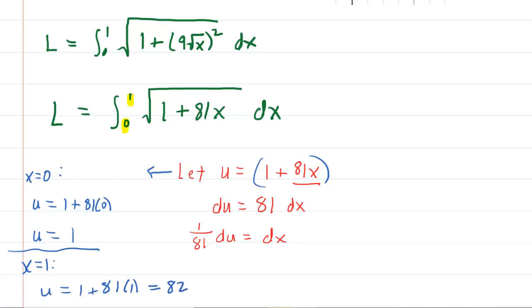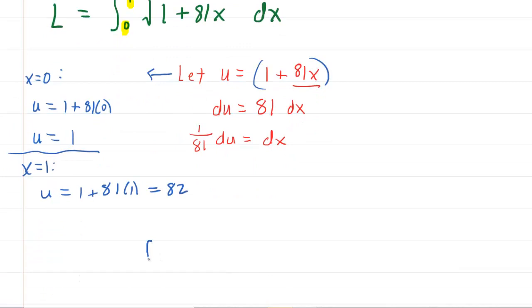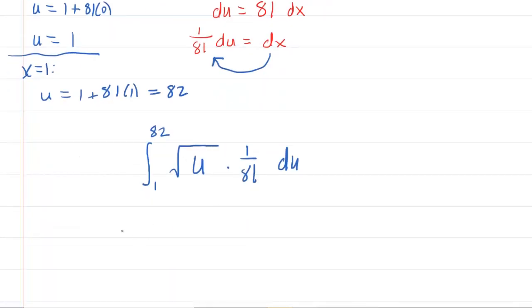Those are your new bounds, so you can rewrite the integral as follows. You're going to integrate from your new lower bound of one to your new upper bound of 82. Then you have the square root of u, and for dx, don't forget that was simplified to one over 81 du. We'll factor out the one over 81, then integrate u to the power of one half to make our integration easier.